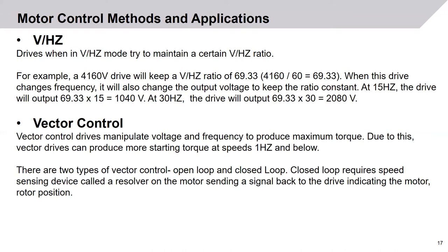Motor control methods and applications: volts per hertz control and vector control. When drives are in volts per hertz mode, they maintain a certain volts per hertz ratio. For example, a 4160-volt drive will keep a volts per hertz ratio of 69.33 (4160 ÷ 60 = 69.33). When this drive changes frequency, it also changes the output voltage to keep the ratio constant. At 15 hertz, the drive outputs 69.33 × 15 = 1,040 volts. At 30 hertz, 69.33 × 30 = 2,080 volts. At 60 hertz, 69.33 × 60 = 4,160 volts.